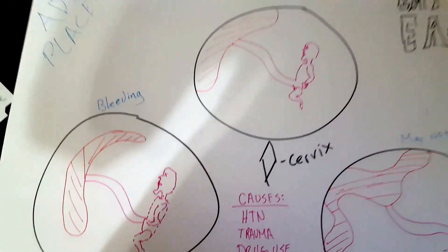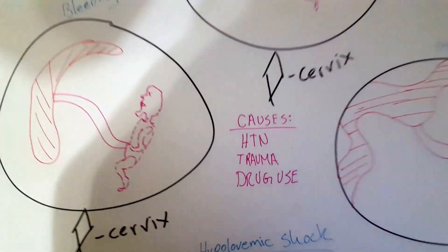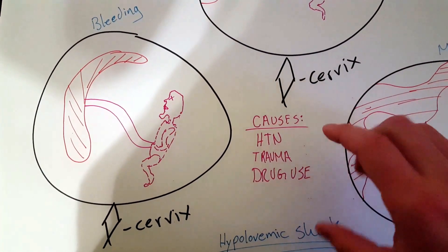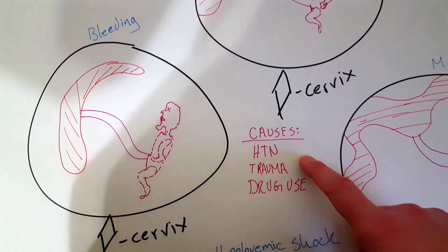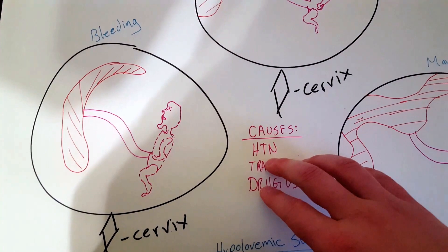So what's going to cause this and what does this mean for the baby? A few things can make abruptoplacenta occur. One is hypertension.